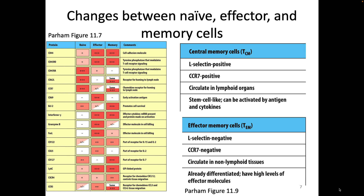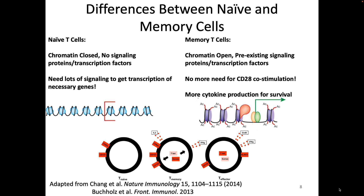In general, we need a lot of signaling to get our genes turned on in a naive cell, partially because that chromatin is closed. In either a memory cell or an effector cell, the chromatin is much more open and we have a lot of signaling proteins pre-made, so that cell has a much lower trigger — it's going to take less to be activated. Both memory cells and effector cells do not need signal 2 anymore. Once they've gotten their first activation, they're good. We're also going to see a lot more general cytokine production from a memory cell to help those memory cells survive.